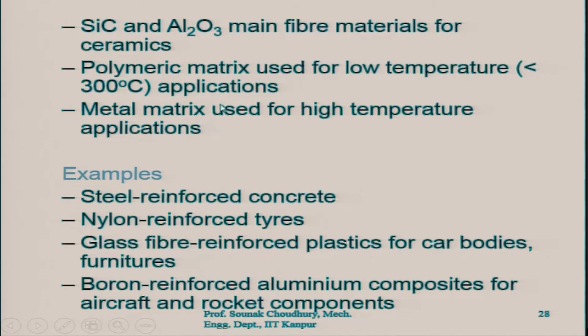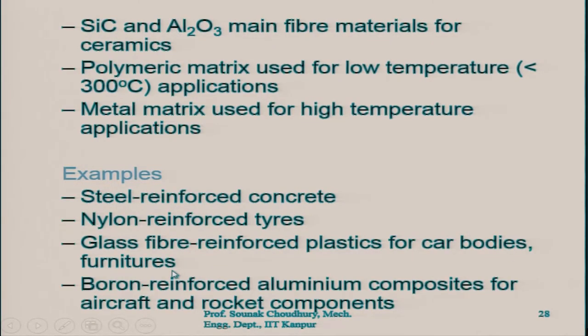Polymeric matrix is used for low temperature applications — up to about 300 degrees centigrade — otherwise it will melt. Metal matrix is used for high temperature applications when temperature goes beyond 500–600 degrees centigrade, because polymeric matrix has a low melting point. Examples include steel-reinforced concrete, nylon-reinforced tires with thin metallic wires, and glass fiber reinforced plastics for car bodies and furniture.